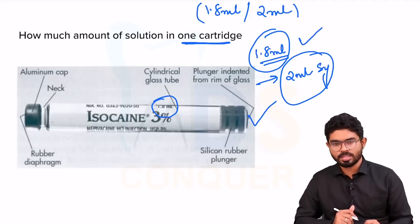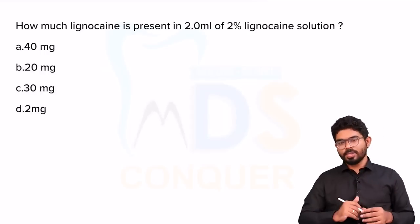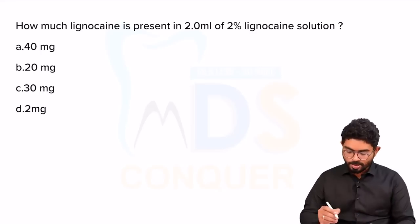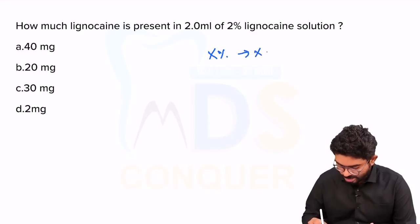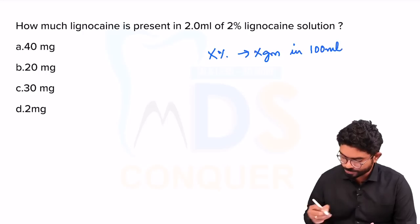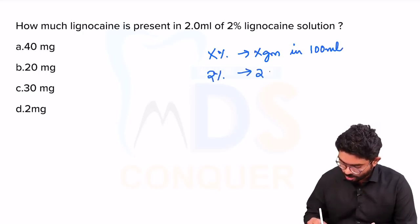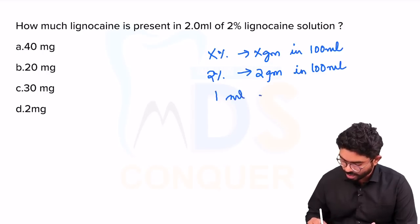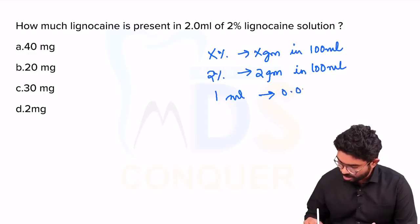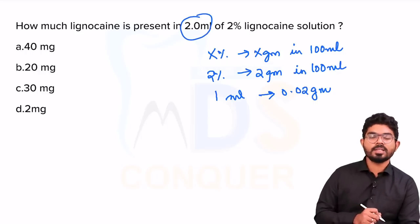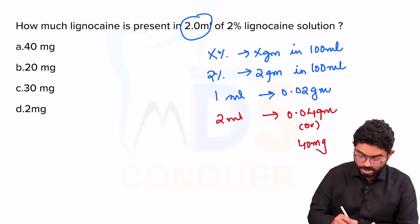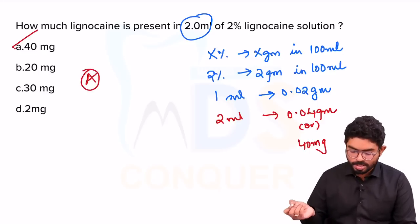Here is how the questions will be framed: how much lignocaine is present in 2 ml of 2% lidocaine solution? We learned that 2% means 2 grams in 100 ml. So in 1 ml it contains 0.02 grams. For 2 ml it's going to be 0.04 grams, or converting to milligrams, that is 40 milligrams. So the answer is 40 mg.